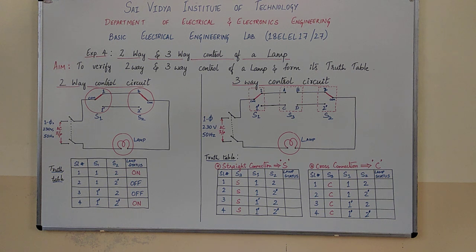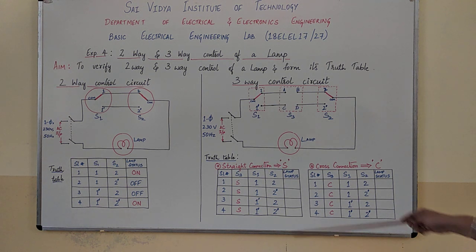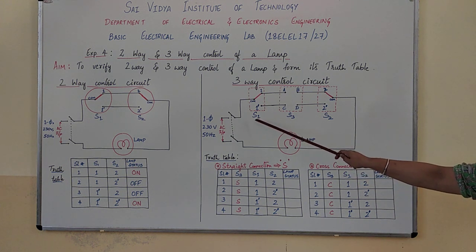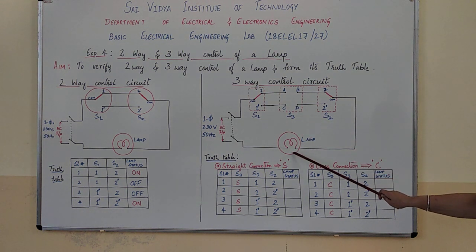Now let us learn the three-way control circuit. In addition to the two-way control circuit, we have an intermediate switch. The addition of this intermediate switch allows a two-way switched lamp to be controlled from a third position as well — that is why it is called three-way control of a lamp. The circuit comprises a single phase 230 volts 50 hertz AC input, switch S1, S2, and an additional switch S3, along with the lamp.